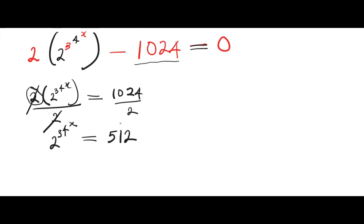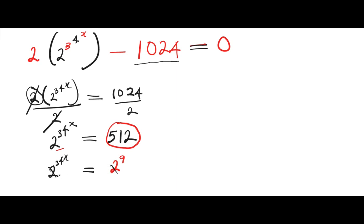Let's express 512 in terms of base two. 512 is equivalent to two raised to the power of nine. So we're gonna have two raised to the power of three raised to the power of four raised to the power of x, equals two raised to the power of nine. The bases are equal — we have two and two — so they cancel each other.